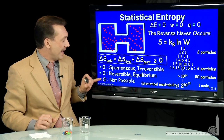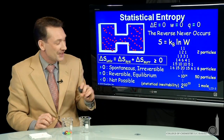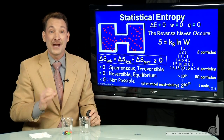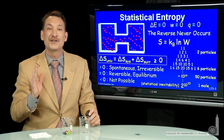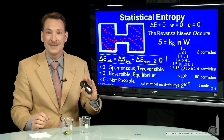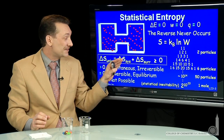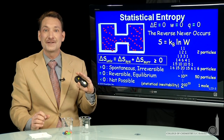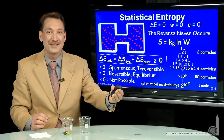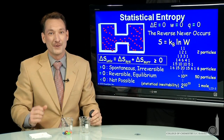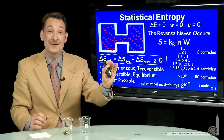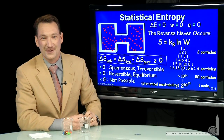Entropy decreasing in the universe — those processes are not possible. So now we have a thermodynamic parameter that will tell us the direction of things. If we can measure the entropy of the system and the surroundings, and if the sum of those entropy changes is greater than zero, then that is the favored direction of that chemical or physical process. It's entropy that determines the favored direction in the universe.